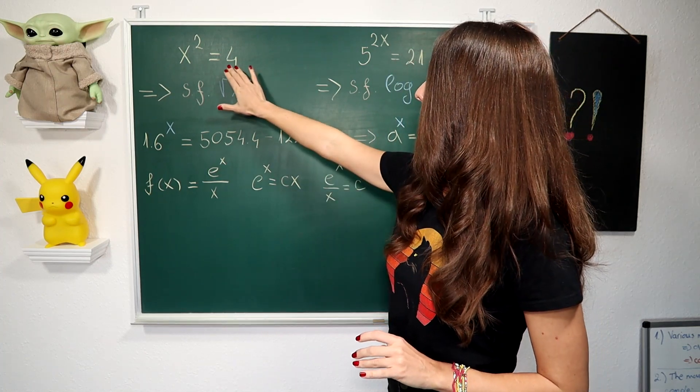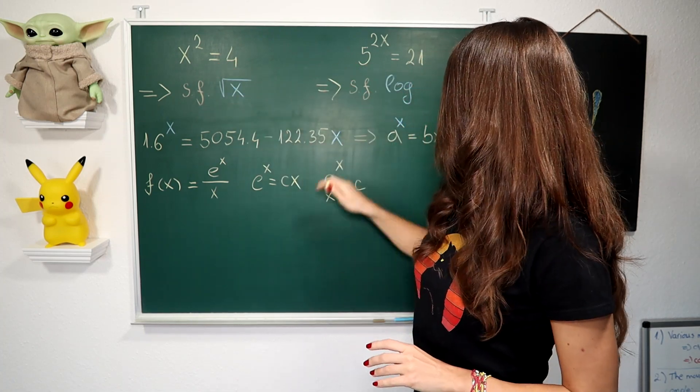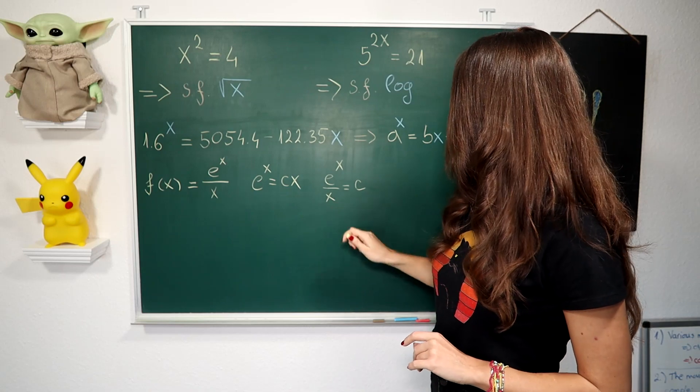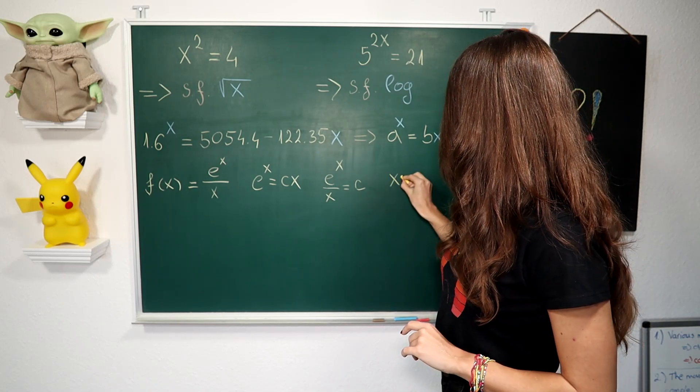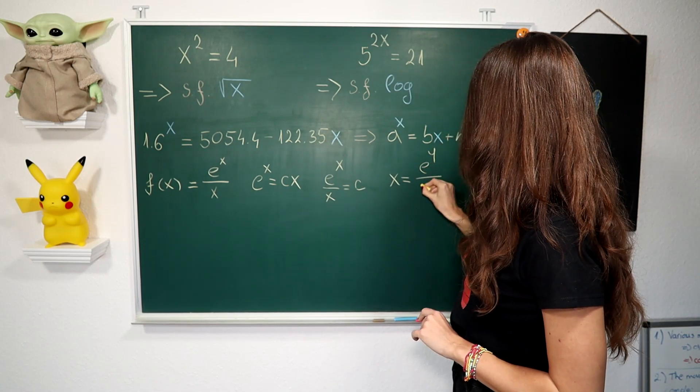And now in analogy with the examples x² = 4 and 5^(2x) = 21, we can take that our x is equal to the inverse of this, and it's e^(dy)/y.